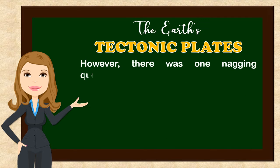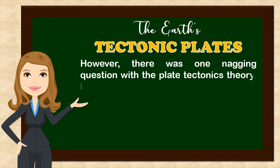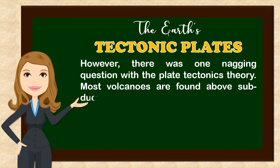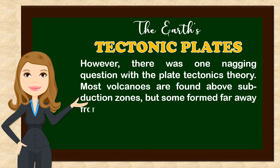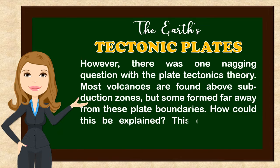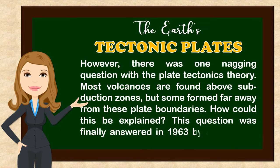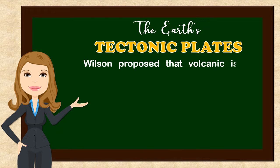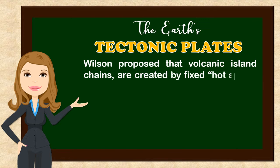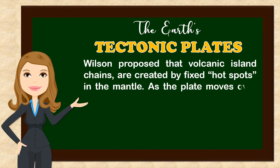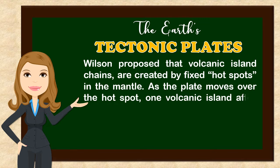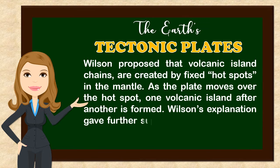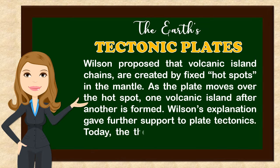However, there was one nagging question with the plate tectonics theory. Most volcanoes are found above subduction zones, but some formed far away from these plate boundaries. This question was finally answered in 1963 by a Canadian geologist, John Tuzzo Wilson. Wilson proposed that volcanic island chains are created by fixed hot spots in the mantle. As the plate moves over the hot spot, one volcanic island after another is formed. Wilson's explanation gave further support to plate tectonics.